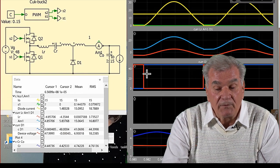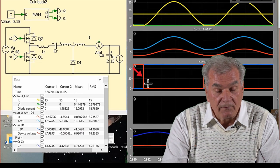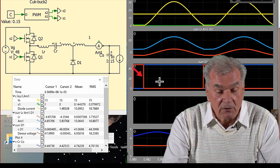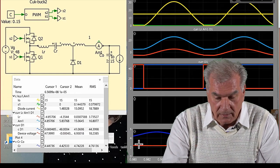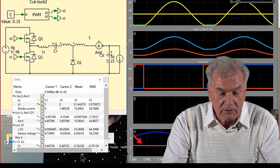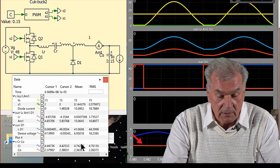The two voltage waveforms on the third channel are for the two transistors, which are in red and blue, driven out of phase.